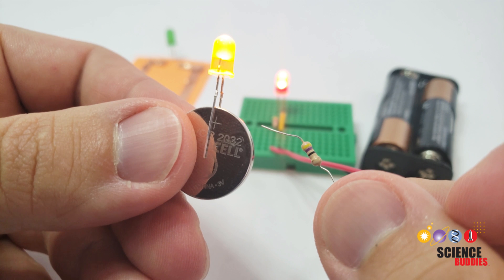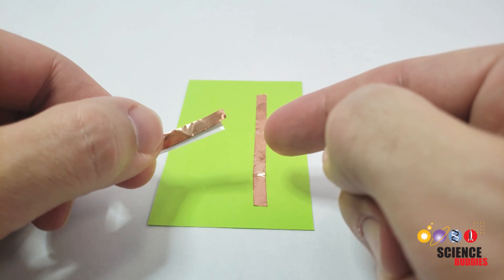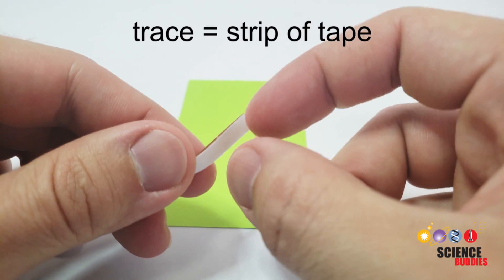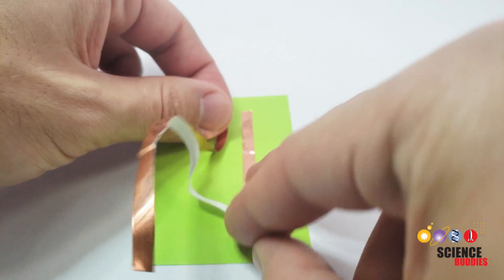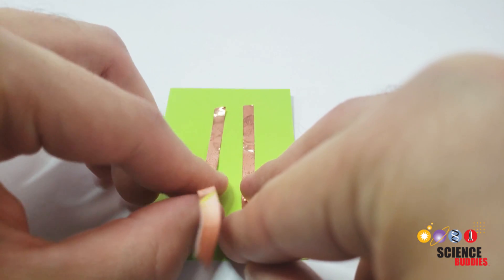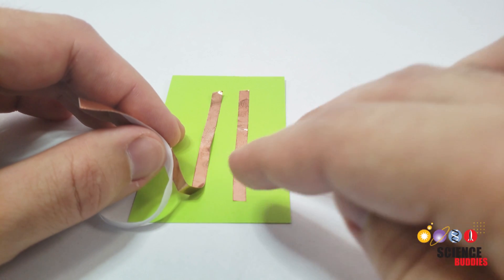We have a separate video explaining that in more detail linked in the description below this one. To make a basic paper circuit, you're going to need two traces of copper tape. The copper tape comes with a paper backing that you can peel off and then stick it to the paper. Try making two parallel traces with about a one centimeter gap in between them. At the end of one of the traces, leave some extra tape that is not stuck to the paper.